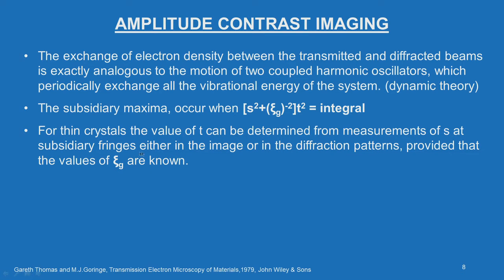The subsidiary maxima occur when (S² + ξg⁻²) · T² equals an integer. For thin crystals, the thickness T can be determined from the measurement of S at subsidiary fringes either in the image or in the diffraction patterns, provided that the values of ξg are known. So you can find the thickness of the foil if you know ξg for a given material.